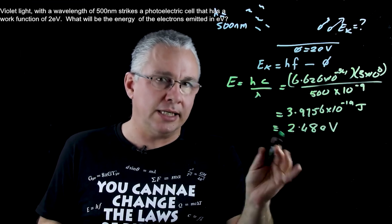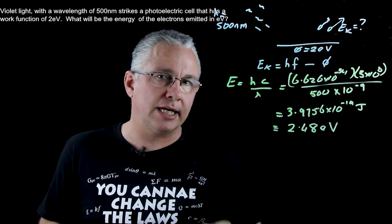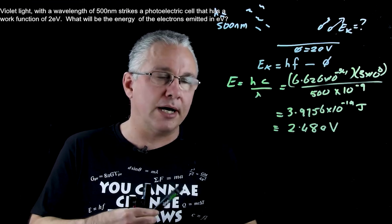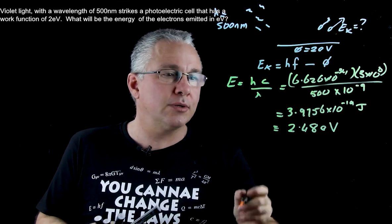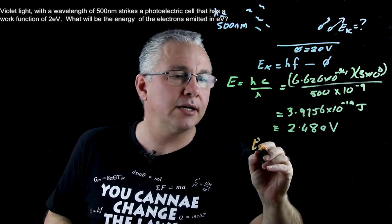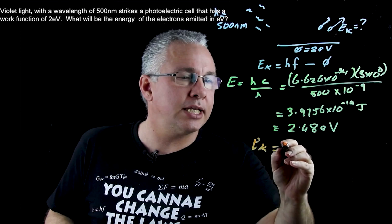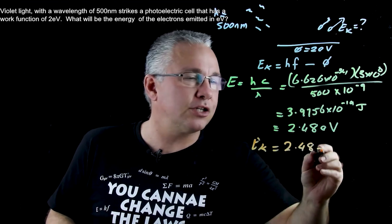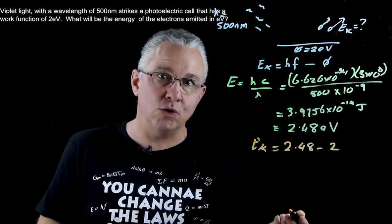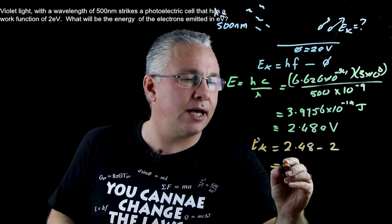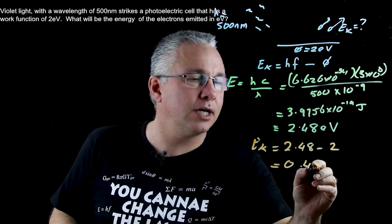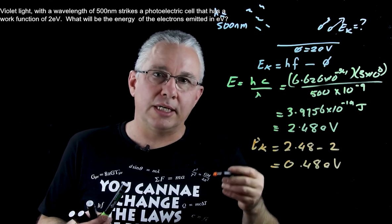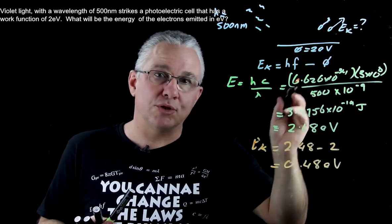That is the energy in electron volts of our incoming photons. To work out the kinetic energy of the electrons: photon energy 2.48 eV minus the work function of 2 eV gives a value of 0.48 electron volts. That is the energy every single electron has as it comes off.